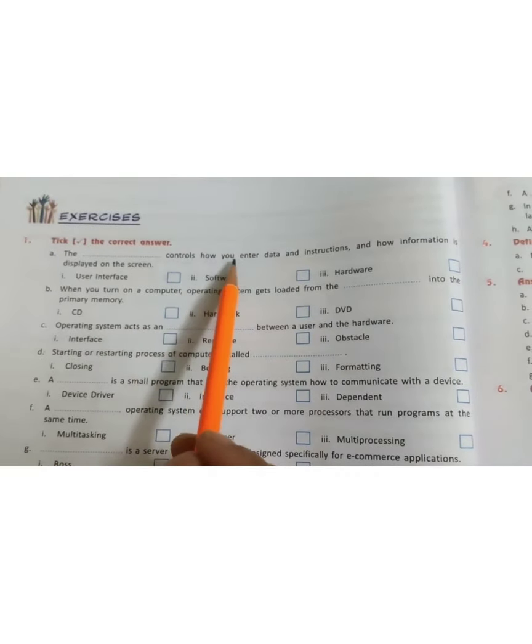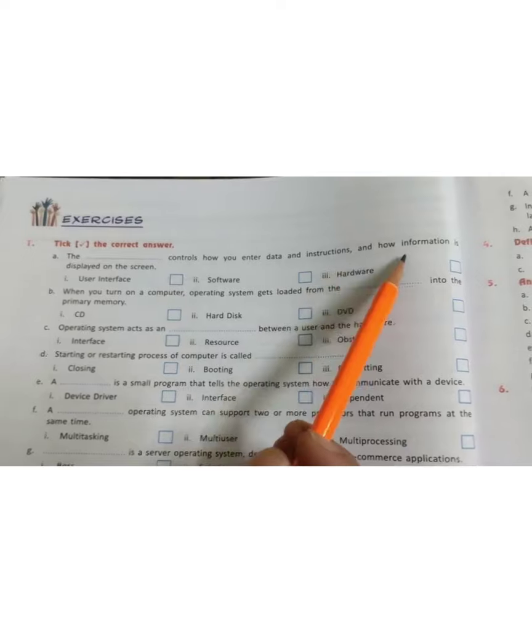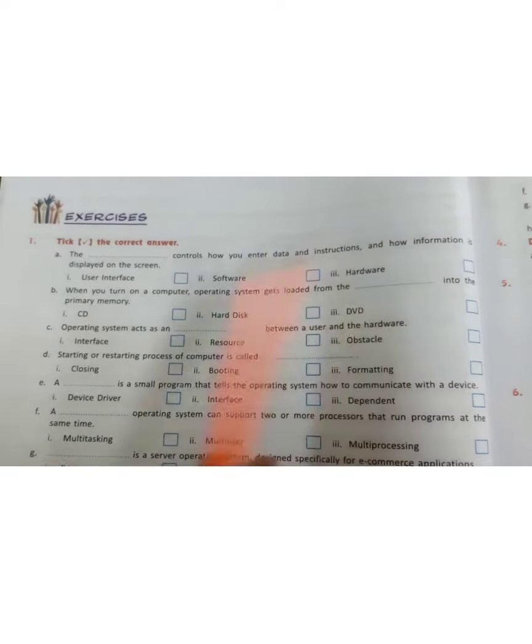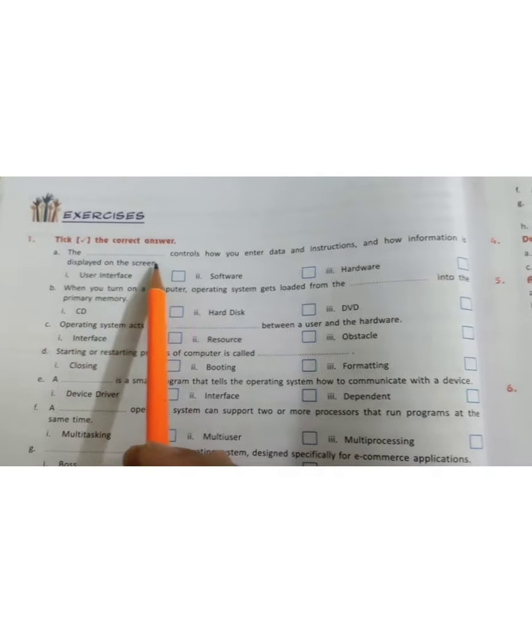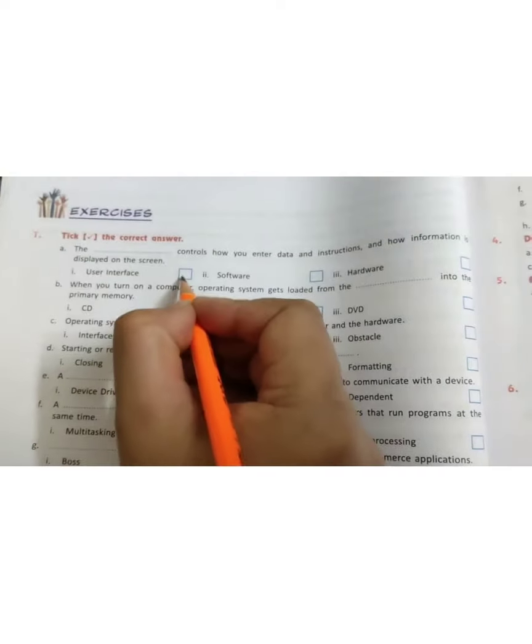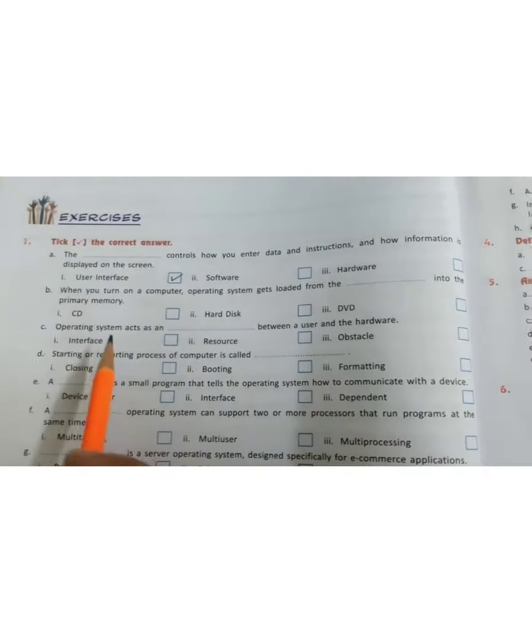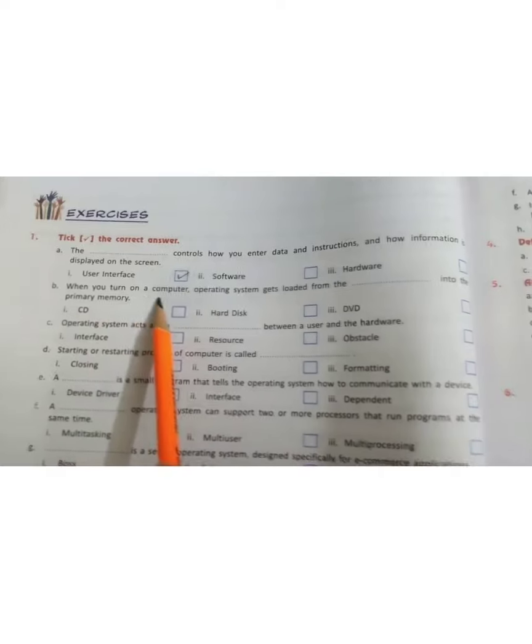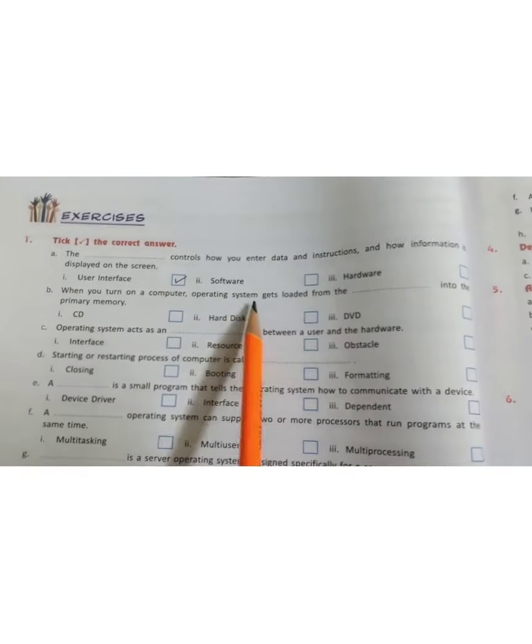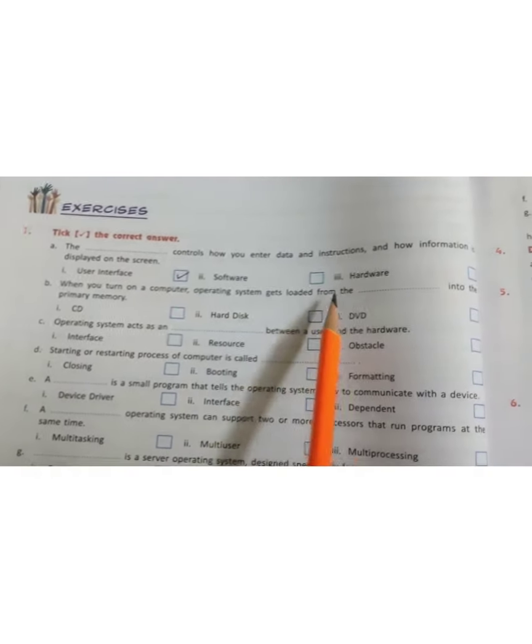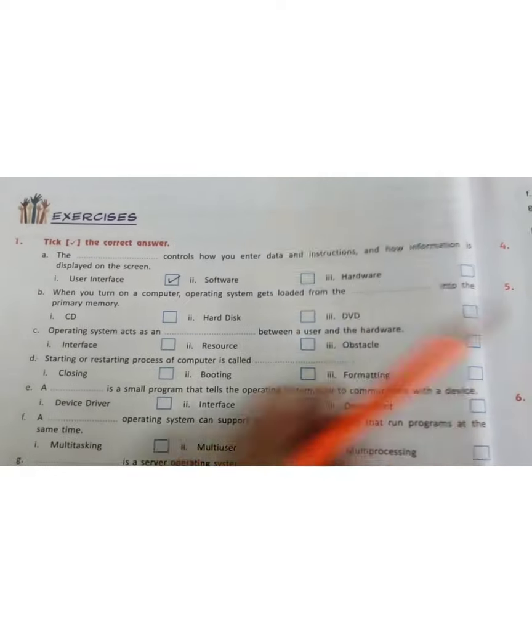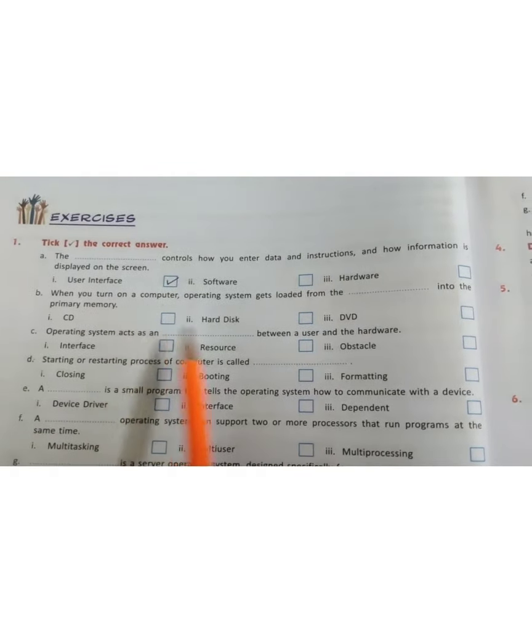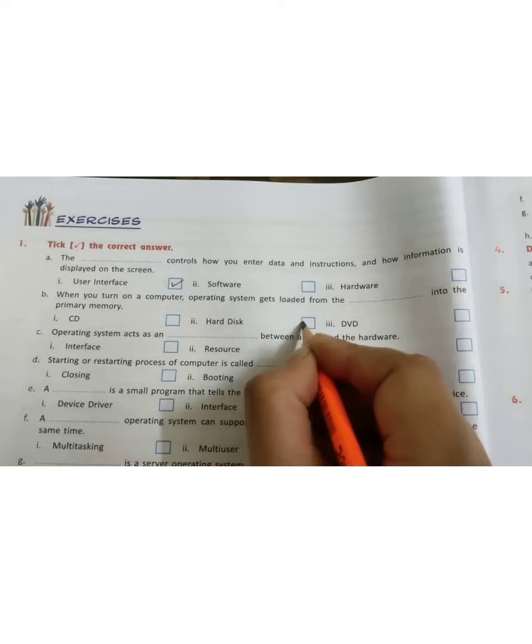The dash controls how you enter data and instructions and how information is displayed on the screen. So the answer is user interface. Next, when you turn on a computer, operating system gets loaded from dash into the primary memory. The answer is hard disk.